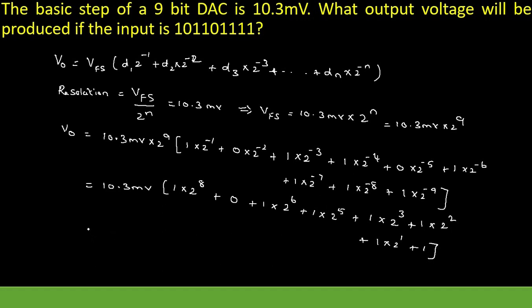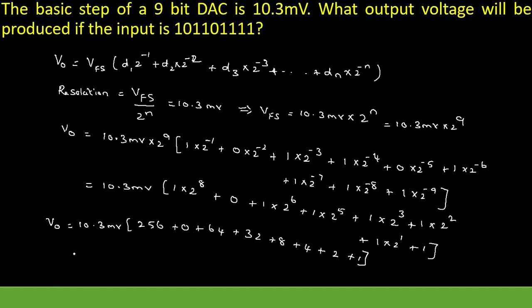Let me consolidate everything. So, V0 is equal to 10.3 millivolt times: 1 times 2 power 8 is 256, plus 0, plus 2 power 6 is 64, plus 2 power 5 is 32, plus 2 power 3 is 8, plus 2 power 2 is 4, plus 2 power 1 is 2, plus 1. So I am getting the answer as 10.3 millivolt multiplied by 367. When you multiply these, we get the answer as 3.78 volt. So, output voltage V0 is equal to 3.78 volt.